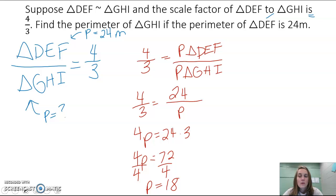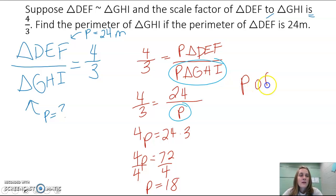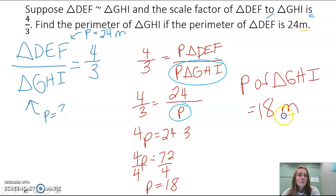P, our variable, represents the perimeter of triangle GHI, which is what we're trying to find. So the perimeter of triangle GHI is 18. Our units from above are meters, so the perimeter of triangle GHI is 18 meters.